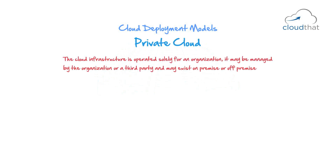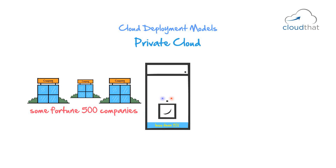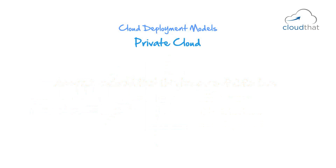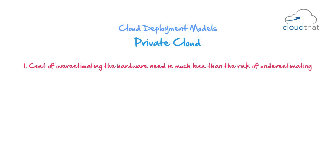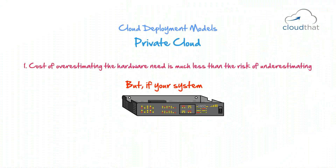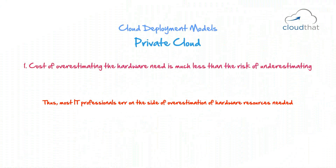Private cloud. A while ago, there was a survey done on some Fortune 500 companies about what is their average CPU utilization of their hardware resources. It was found that less than 5% of their hardware was being utilized. The research realized that it is because of two factors. One is that the cost of overestimating hardware needs is much less than the risk of underestimating. No one gets fired for overestimating hardware needs, but if your system crashes due to underestimation, you might be in trouble. Thus, most IT professionals err on the side of overestimation of hardware resources needed.